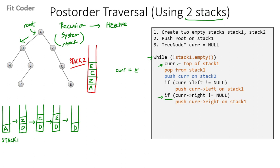In the next iteration, we set current to the top of stack1, which is D. We pop from stack1, so it becomes empty. Then we push current onto stack2. We check the left of D, which is H, so we push H on stack1. We check the right of D, which is L, so we push L also on stack1.